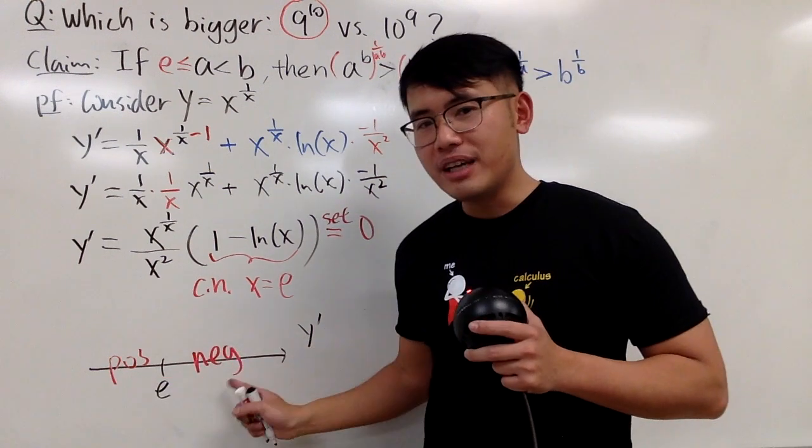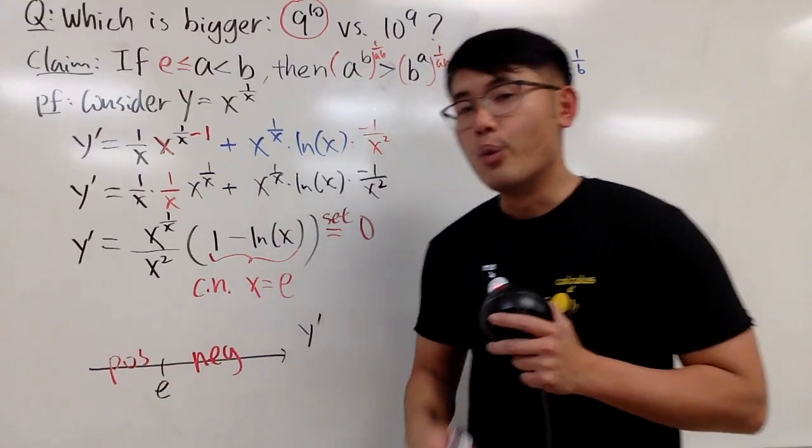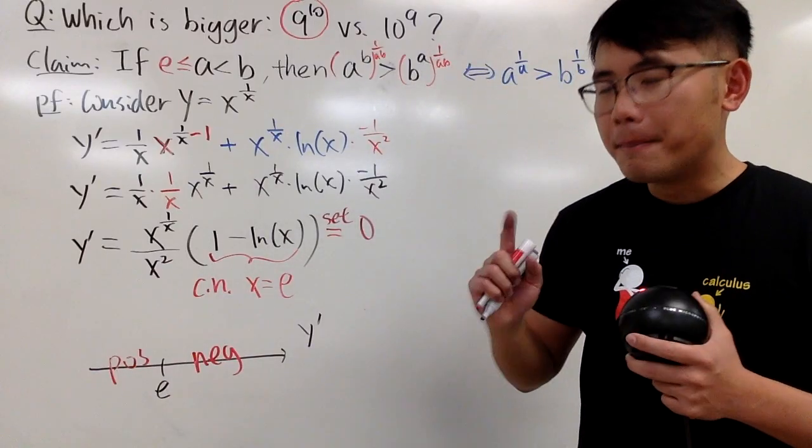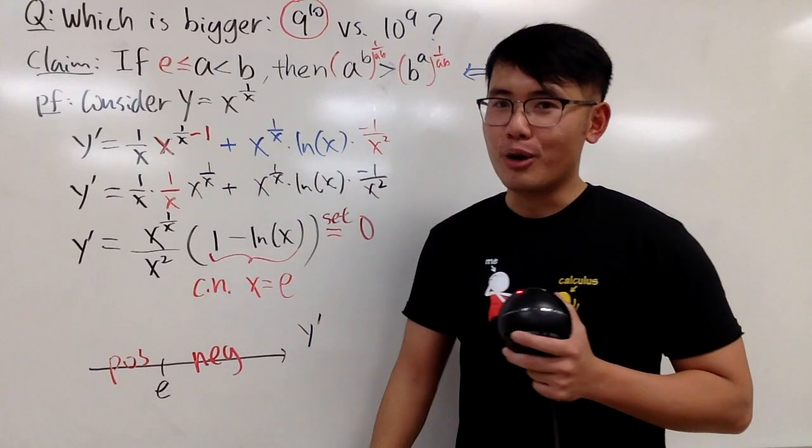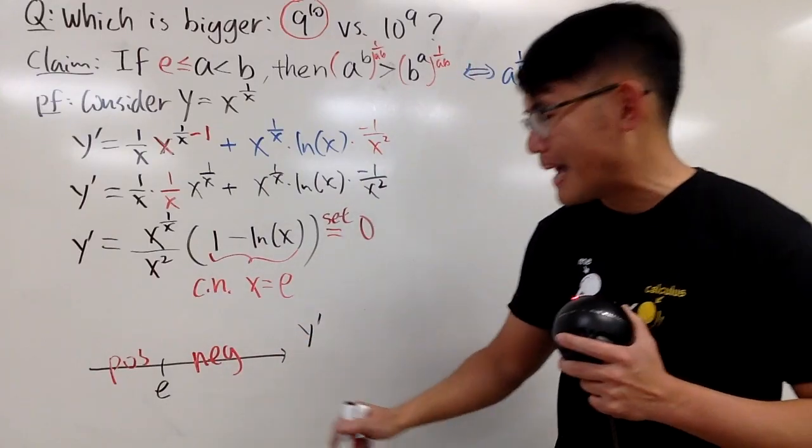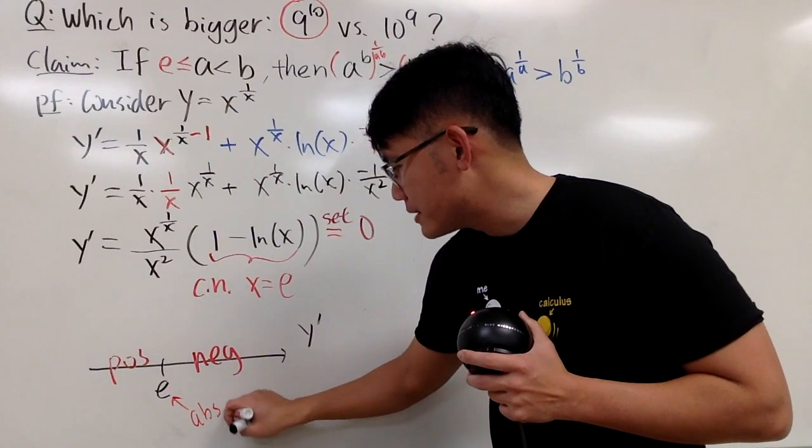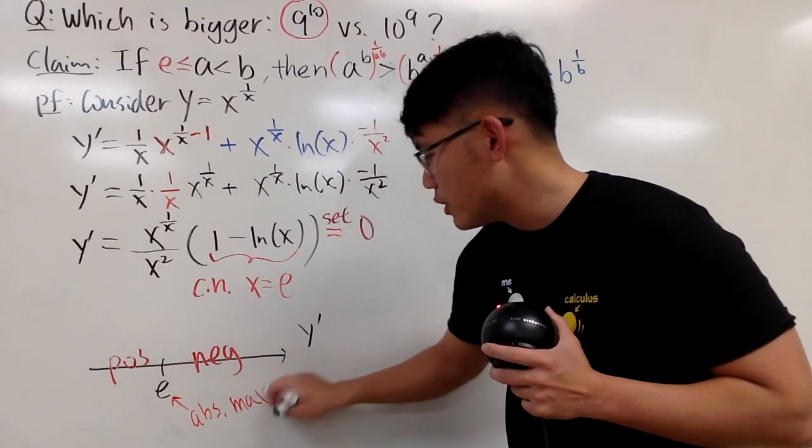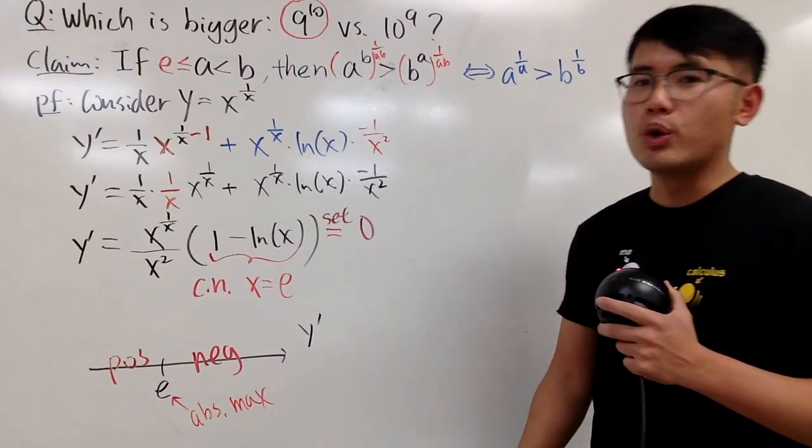And then pick a number bigger than e, let's say e to the second power. This is always positive. 1 minus ln e to the second power is 1 minus 2, it's negative. First derivative goes from positive to negative, so that means what? This right here, we have a local maximum. But this is the only local maximum. So in fact, this is also the absolute maximum.